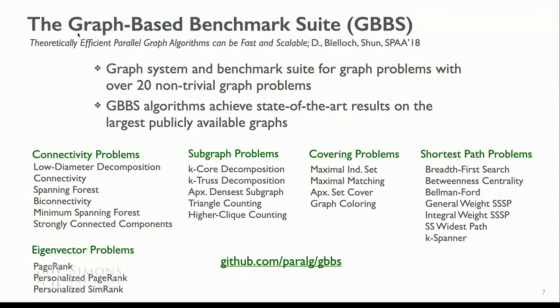This led to our work on the Graph-Based Benchmark Suite, or GBBS — a graph processing system and benchmark suite published in 2018 that specifies input-output specifications for a collection of 20 problems, now grown to about 30. What we showed is that you can take very simple textbook algorithms from the parallel algorithms literature of the 1980s developed for the PRAM — there are actually a lot of very practical ideas in those algorithms. By carefully implementing algorithms from the PRAM literature, you can get very fast and scalable algorithms that are practical and scale to the largest publicly available graphs. The code is publicly available.